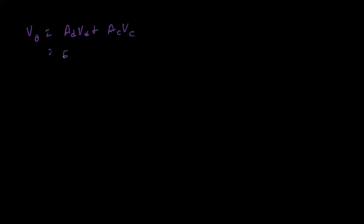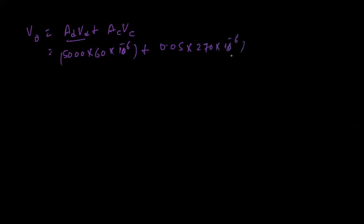Now substituting into the formula: V_output = A_d × V_d + A_c × V_c = 5000 × (60 × 10^−6) + 0.05 × (270 × 10^−6). The differential mode component is 5000 × 60µV, and the common mode component is 0.05 × 270µV. Calculating this gives V_output ≈ 0.300135 volts. This is the output for question one.